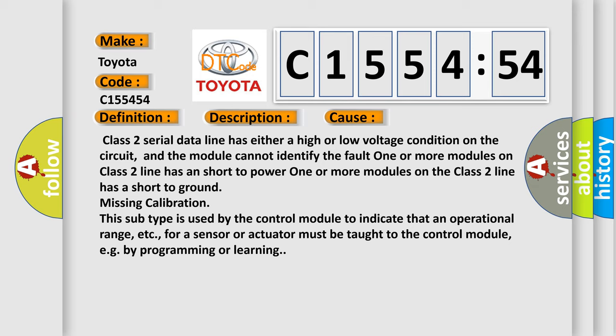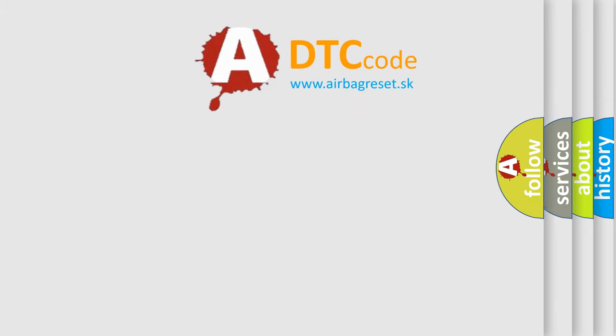This subtype is used by the control module to indicate that an operational range, etc., for a sensor or actuator must be taught to the control module, e.g., by programming or learning.